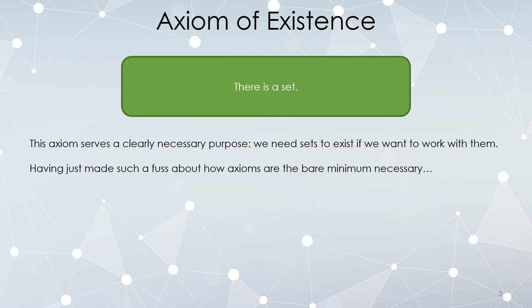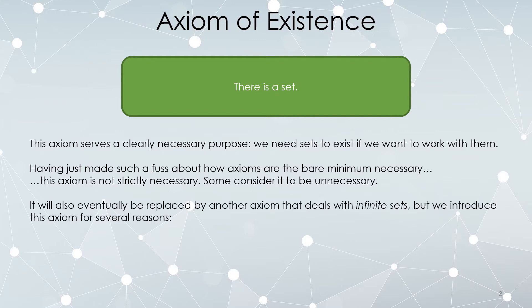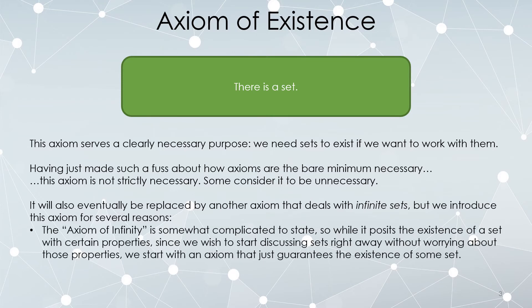We said we want as few axioms as possible. This axiom is actually not strictly necessary — some people think you don't need to declare it at the beginning. At the bare minimum, it's going to be replaced by a stronger axiom later that deals with infinite sets. There will be an axiom saying there is a set which is infinite, and if there is an infinite set, there's definitely a set. So this isn't strictly necessary, but we don't want to discuss that other axiom right now. The axiom of infinity is complicated to state — what does it mean to have infinitely many elements? So rather than introduce a complicated axiom, we just start by saying there is a set.